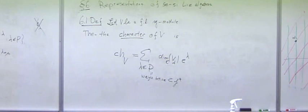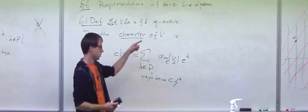But there is another possible interpretation, namely the character of V as a function, say on H, on the Cartan algebra, with values in the set of complex numbers. So how do we interpret such a thing as a function?